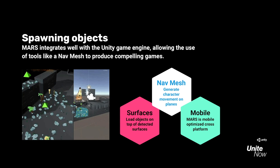Mars integrates seamlessly with the current Unity game engine, allowing the use of tools like a nav mesh to produce compelling games. We can generate character movements across multiple planes using the Mars toolkit and the Unity game engine with the nav mesh. We can also load objects on top of detected surfaces — our character is spawned on top of a surface and then multiple additional objects are loaded. The character can run between the bounds of the surface before the user draws their first bridge in the game. Finally, and most importantly, Mars is mobile-optimized and cross-platform, meaning it can work on any iOS or Android device, which is critical for us as game developers.